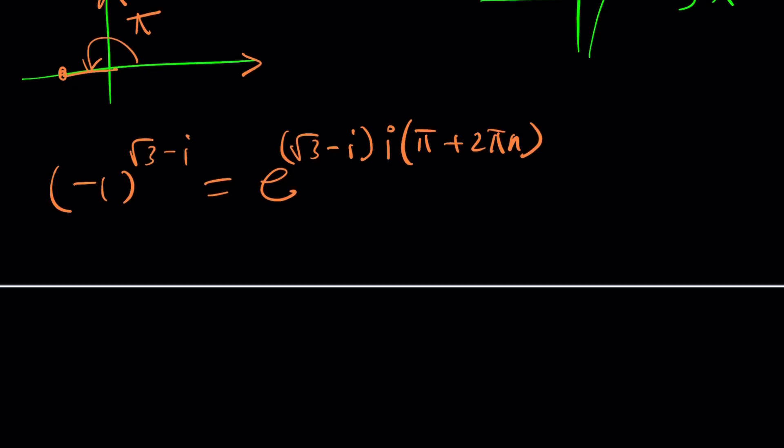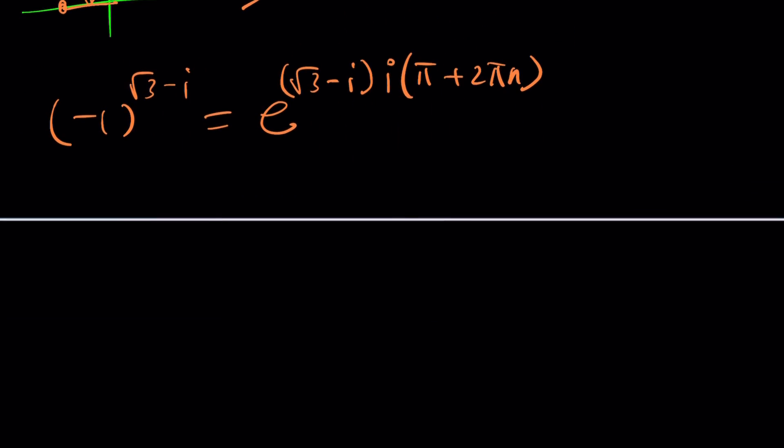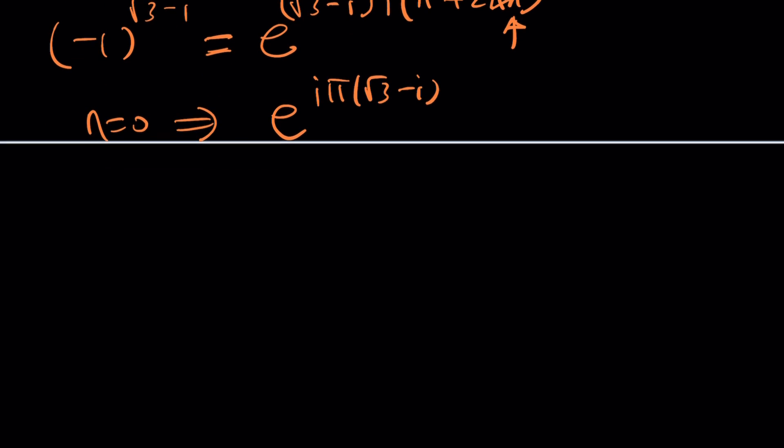The story doesn't end here so just stick around, bear with me we're almost done. For simplicity's sake I can assume that n is equal to zero for now and you can look at the other cases. Now we're going to get e to the power i pi multiplied by root three minus i because this is going to disappear if n is zero. Now this can be simplified. Let's distribute. We get negative i squared which is actually one so it's going to be e to the power one plus i times root three pi.